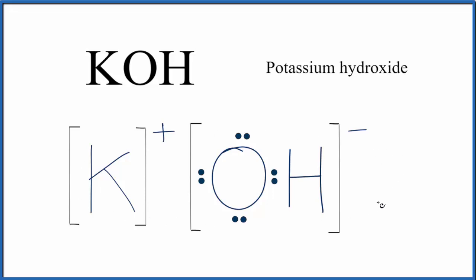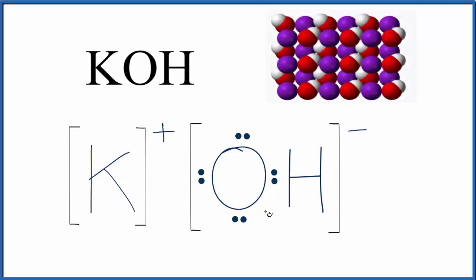Understand that this is what we call a formula unit. There will actually be many of these formula units arranged in a regular pattern in a crystal of KOH. This Lewis structure, the formula unit of KOH, helps us understand how the electrons are arranged in this compound.